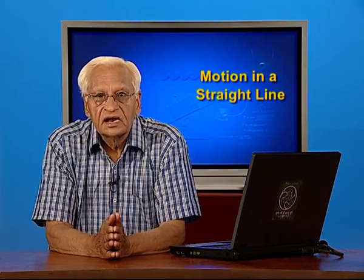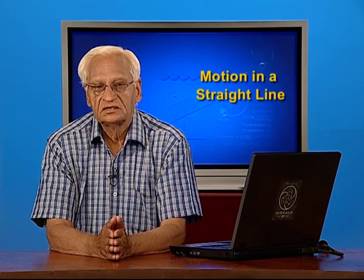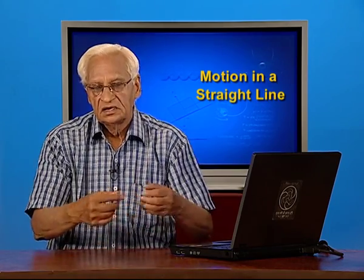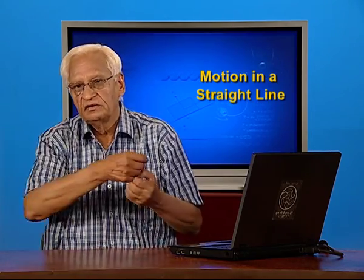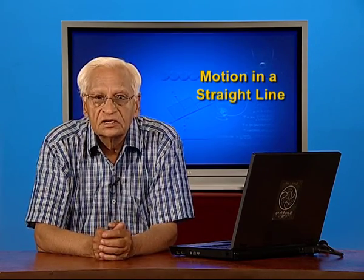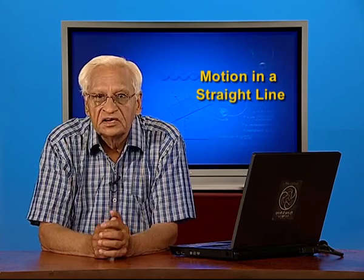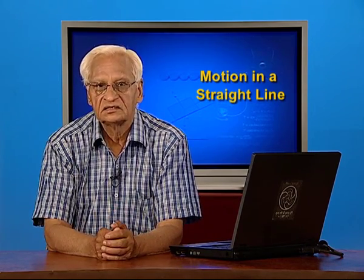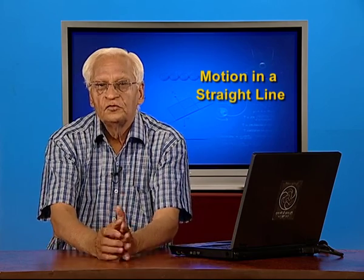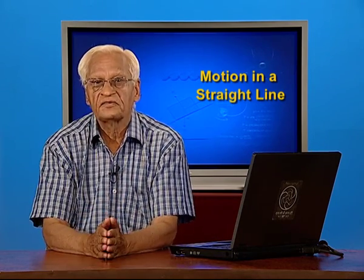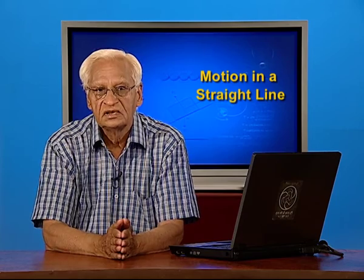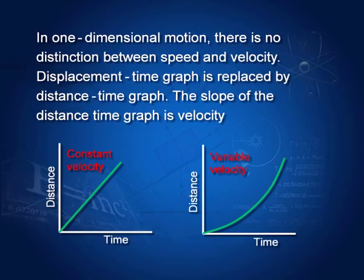We are now ready to consider motion in one dimension. In one dimension, since we have only one line along which the body goes, there is no need to distinguish between the distance covered and the displacement. Therefore, we shall take the distance time graph rather than displacement time graph. The velocity would be constant if the graph is linear and variable if the graph is non-linear.